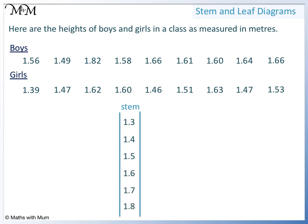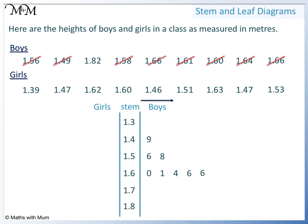Now we enter the data for boys. There are no boys with a height starting with 1.3. We have 1.49 — this ends in 9, so we enter a 9 next to the 1.4. In the numbers starting 1.5, we have 1.56 shown with a 6, and 1.58. We have 1.60, 1.61, 1.64, and two 1.66s. Finally, we have 1.82, shown with a 2 in the 1.8 stem.